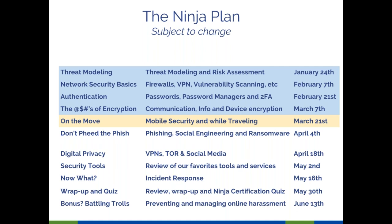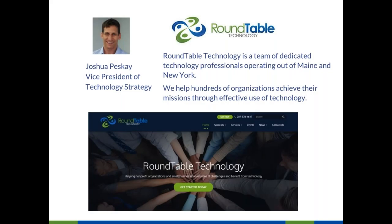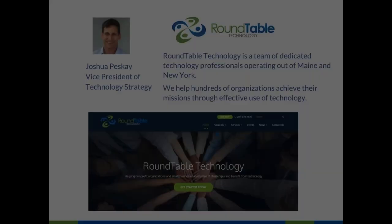So we've covered threat modeling and risk assessment, network security basics, firewalls, VPN, and vulnerability scanning. We're going to be talking about VPNs again today, but in a different context. We've talked about authentication, passwords, password managers, two-factor authentication, and encryption — that's going to come up again today. In two weeks we'll have Don't Feed the Fish: phishing, social engineering, and ransomware. I am Joshua Pesce, and with me is Ben Gardner, also from Roundtable — a team of dedicated technology professionals operating out of Maine and New York, working with hundreds of organizations.